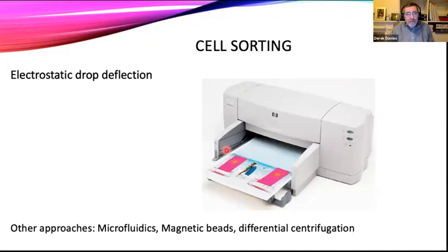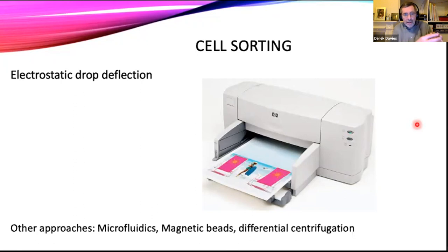The way most of the sorters we're likely to come across in the flow cytometry world work is very much the same as the way an inkjet printer works. You quite often don't need to know how an inkjet printer works — you press print on your computer, you walk to the printer and there's your page. But it works by the principle of electrostatic drop deflection: we form small droplets of ink, we give them a charge, and they pass through an electrical field and are moved to whichever area of the paper your red, blue, green, or black ink goes.